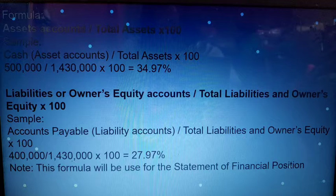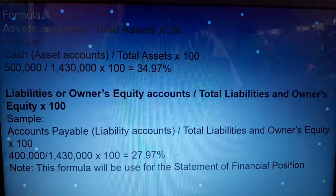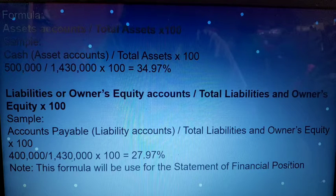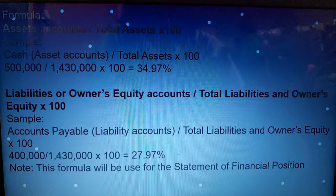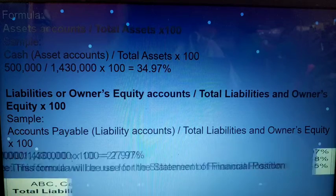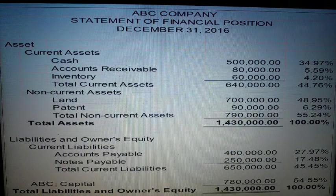The formula for horizontal analysis is: current period minus the previous period — first you get the increase or decrease, then you proceed to the percentage. In vertical analysis, you go directly to getting the percentage. Why? Because you are not comparing two years. You are only analyzing one year in vertical analysis. This is an example of a vertical analysis: the APC Company statement of financial position for the year ending December 31, 2016.